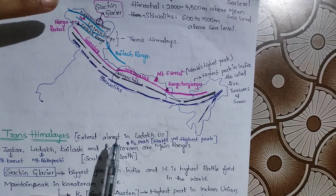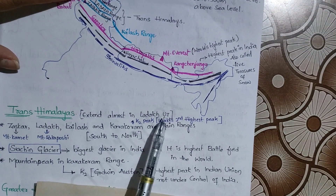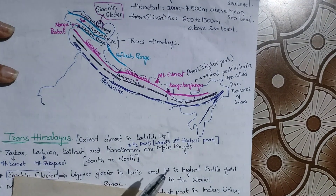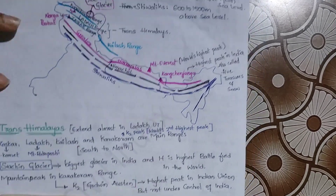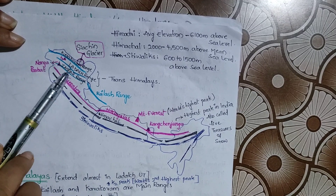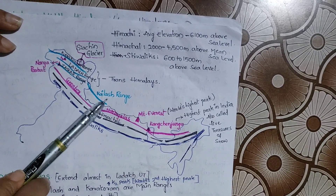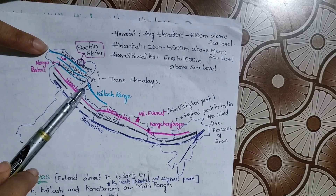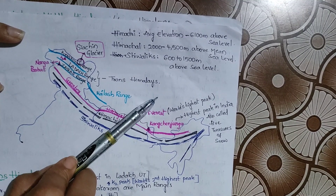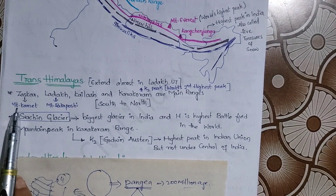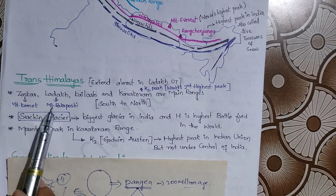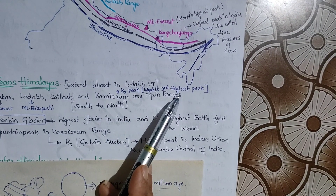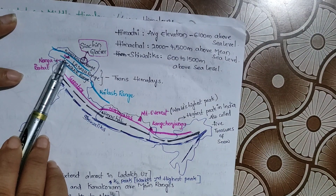The Trans-Himalayan Zone is extended almost entirely in Ladakh. The important ranges in this zone are Zaskar, Ladakh, Kailash, and Karakoram ranges. As you can see in the picture, the first range is Karakoram, then Ladakh range, then Zaskar range, and then Kailash range - from north to south. The highest peak in the Zaskar range is the Kamet Peak; the highest peak in the Ladakh range is Mount Rakaposhi; and the highest peak in the Karakoram range is K2, which is the second highest peak in the world.